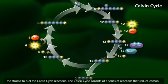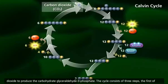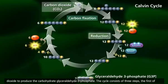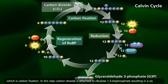The Calvin Cycle consists of a series of reactions that reduce carbon dioxide to produce the carbohydrate glyceraldehyde-3-phosphate. The cycle consists of three steps, the first of which is carbon fixation.